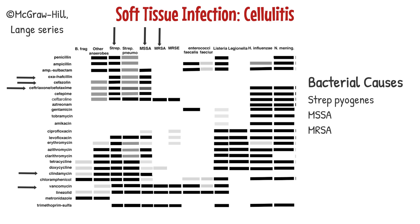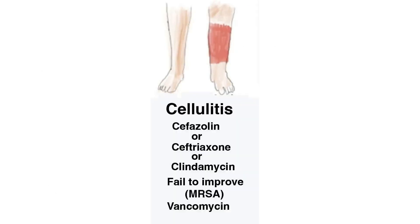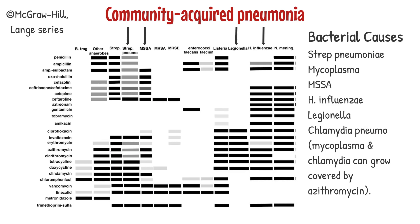Because bacteria doubling time is approximately 60 minutes, clinicians cannot wait for the definitive identification of the organism causing infection and should begin an empiric or best-guess regimen. The recommended empiric regimen for moderately severe cellulitis requiring hospitalization is IV cefazolin, IV ceftriaxone, or IV clindamycin. Oxacillin and nafcillin are no longer recommended because of their expense and short half-life. If the infection does not improve, you should switch to vancomycin to cover for MRSA.